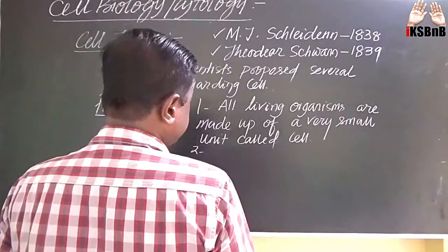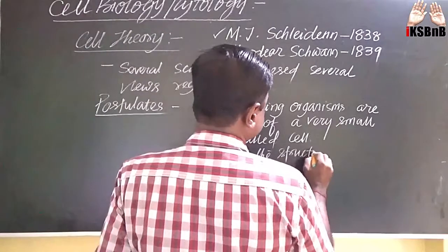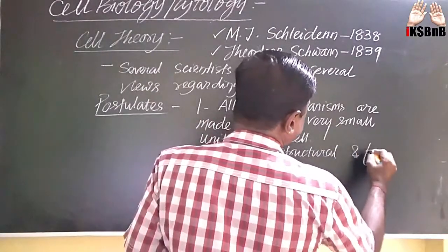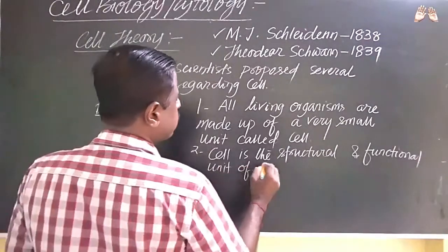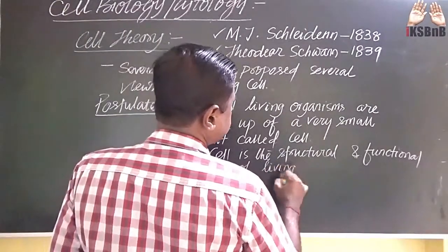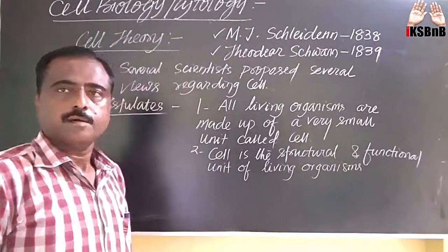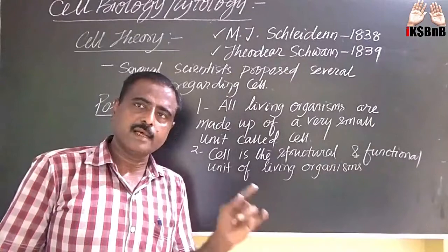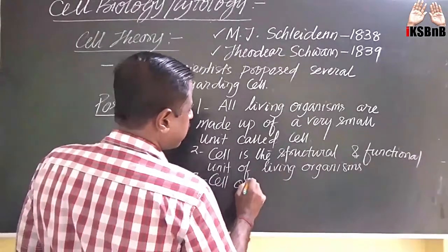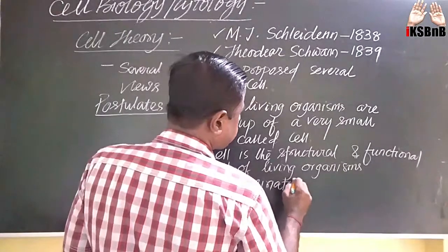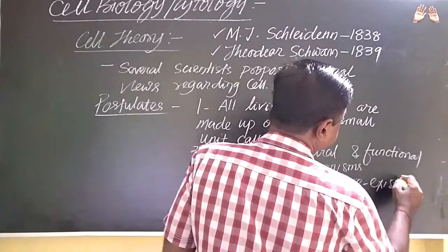Number 2: Cell is the structural and functional unit of living organisms. Number 3: Cell originates from pre-existing cells.